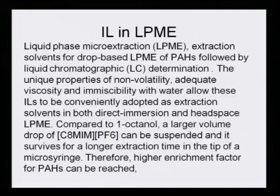Compared to 1-octanol, a large volume drop of C8-MIM-PF6 can be suspended and it survives for a longer extraction time at the tip of a microsyringe. Therefore, a higher enrichment factor for polyaromatic hydrocarbons can be reached. It is like a probe where the tip holds a large volume drop of this ionic liquid — the hexafluorophosphate-based IL — allowing higher amounts of PAH to attach there. The adaptability of ionic liquids in liquid phase microextraction is thus very facile.